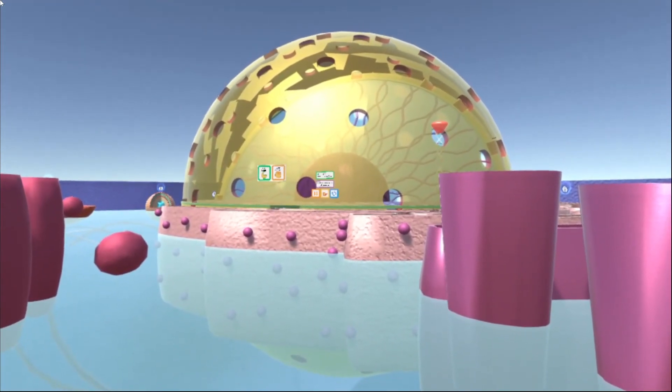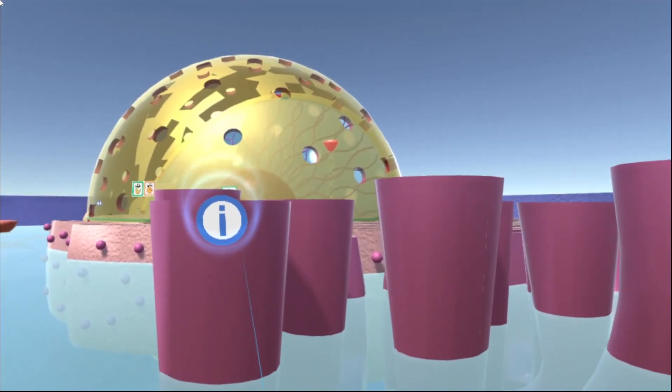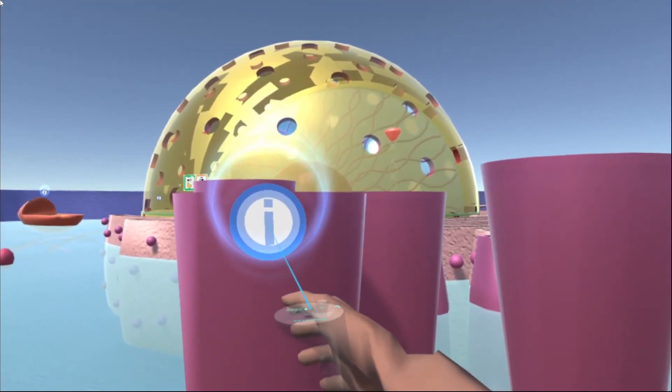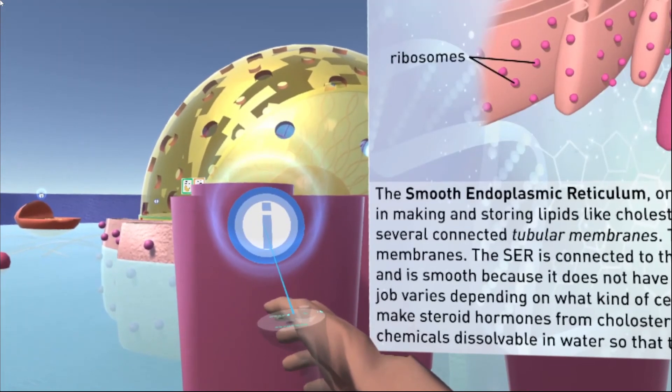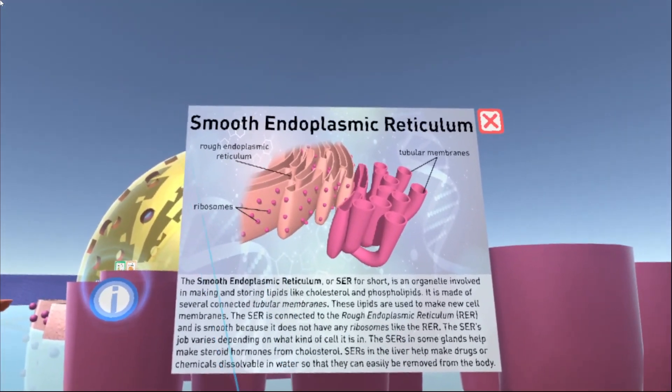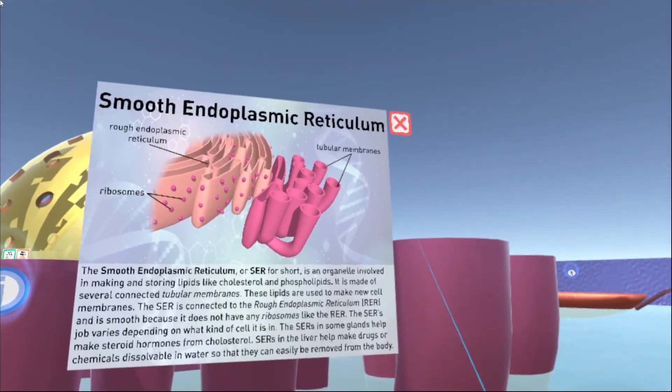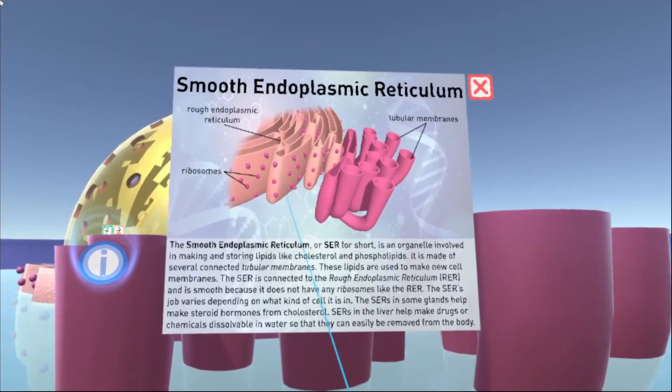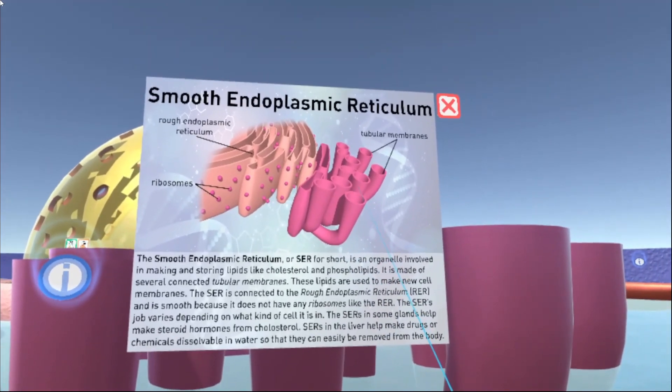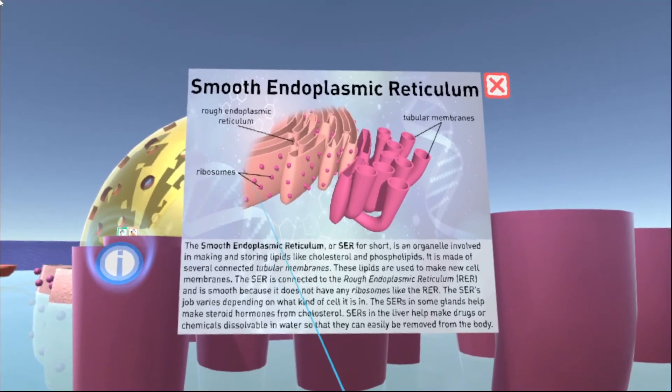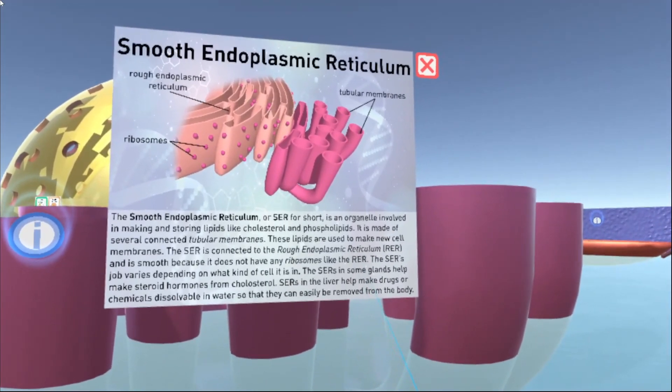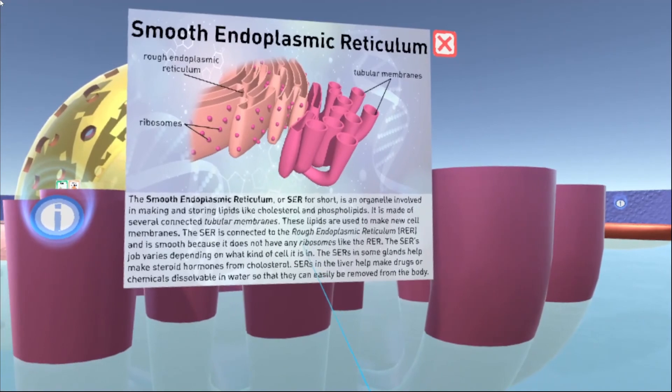All right, let's get started with our tour. You'll see that all of our organelles here have these little info buttons floating around them. These little blue and white eye buttons. If we aim our pointer at these buttons, we can click on it with that trigger button. And we can get this little infographic that pops up. So each infographic will tell you what the name of the organelle is. So we can see that this is the smooth endoplasmic reticulum. It'll show us a labeled diagram of that organelle. So we can see that the smooth ER is different from the rough ER because it doesn't have any of these ribosomes that stud the surface of the rough ER.